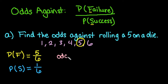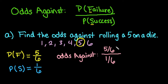When finding the odds against, you're going to put the probability of failure, 5/6, over the probability of success, 1/6. Then we're going to simplify this complex fraction. What we do is multiply both the numerator and denominator by 6. Essentially, we're multiplying by 1, so these cancel out and we end up with 5/1.